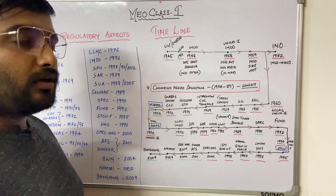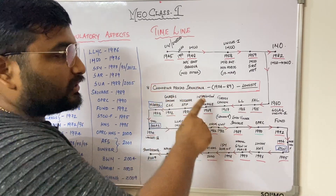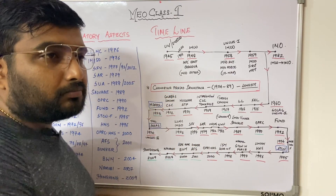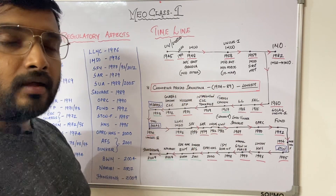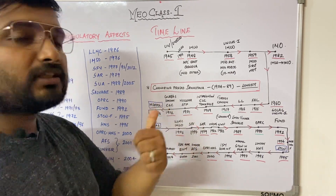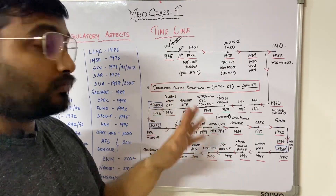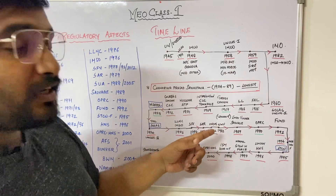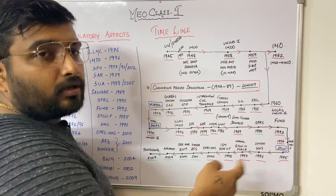An interesting fact: Chandrika Prasad Srivastava was the Secretary General who served the longest term — from 1974 to 1989, almost 15 years across four terms in a row. Probably Indian, and till now no one has broken his record. He was also the first Chancellor of the World Maritime University, which was formed in Malmö, Sweden in 1983.